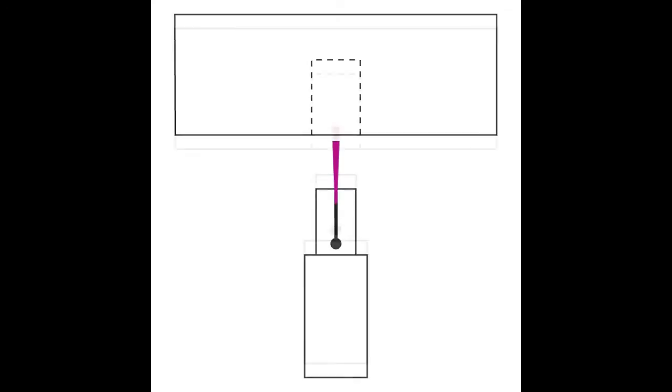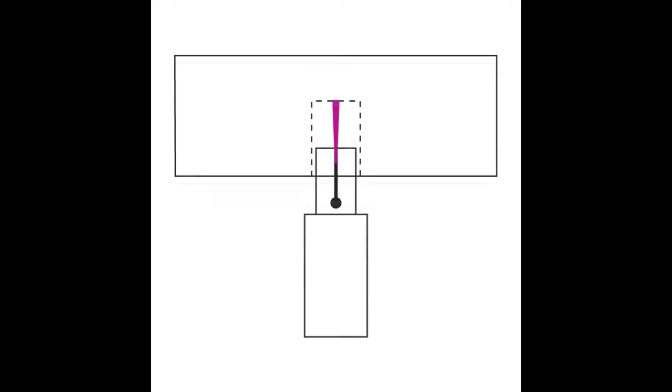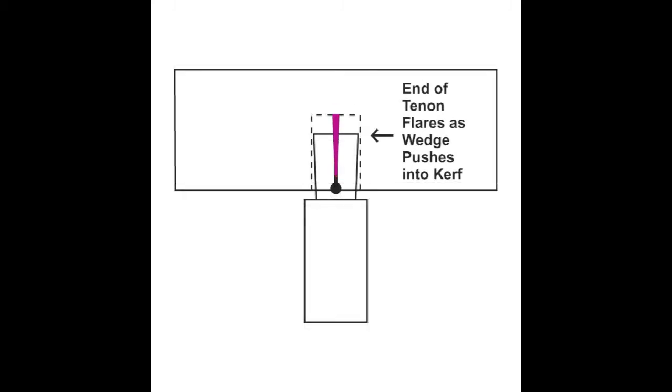As the tenon is driven into the mortise, the wedge reaches the bottom of the mortise and jams back into the saw kerf, effectively flaring the tenon and locking it in place.